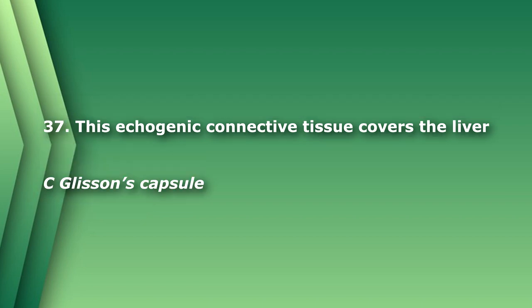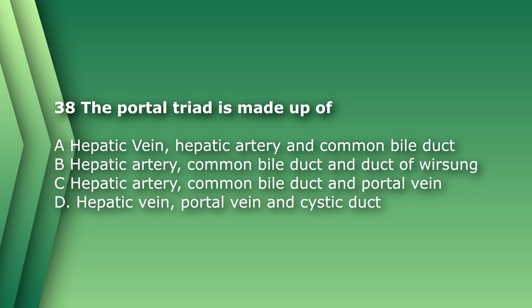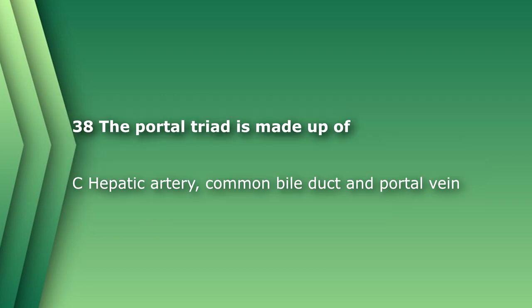Number 38. The portal triad is made up of: A. Hepatic vein, hepatic artery, and common bile duct. B. Hepatic artery, common bile duct, and duct of Wirsung. C. Hepatic artery, common bile duct, and portal vein. D. Hepatic vein, portal vein, and cystic duct. The answer is C: hepatic artery, common bile duct, and portal vein. The portal vein brings two-thirds of the oxygenated blood to the liver, and the hepatic artery brings in one-third.